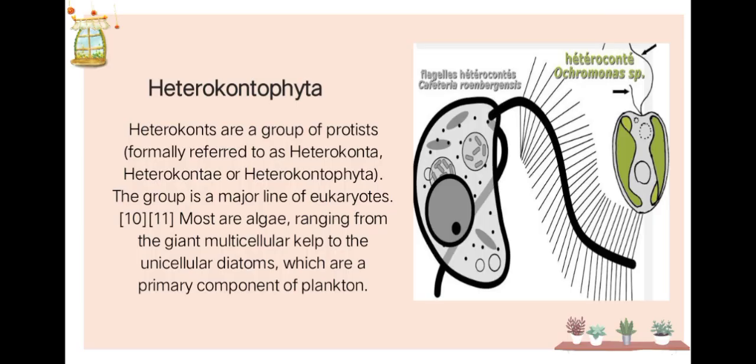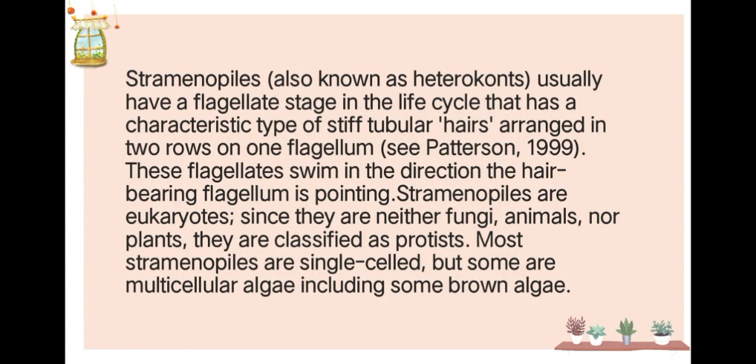Heterocontophyta, or heteroconts, are a group of protists formerly referred to as Heteroconta, Heteroconti, or Heterocontiphyta. The group is a major line of eukaryotes. Most are algae ranging from giant multicellular forms to unicellular diatoms, which are primarily components of plankton. Stramenophiles — also known as heteroconts — usually have a flagellate stage in their life cycle with a characteristic type of stiff tubular hairs arranged in two rows on one flagellum. Stramenophiles are classified as protists, since they are neither fungi, animals, nor plants.